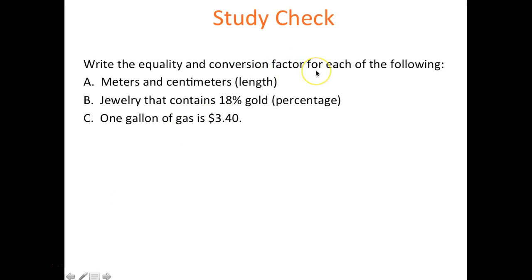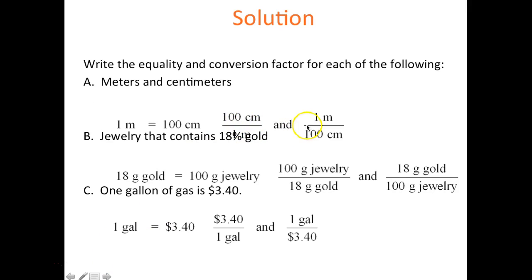Write equalities and conversion factors for each of the following. Meters and centimeters: 100 cm per meter, so 1/100 and 100/1. Jewelry that contains 18% gold: 18 g gold per 100 g jewelry, and 100 g jewelry over 18 g gold. One gallon of gas costs $3.40: $3.40 over one gallon, and one gallon over $3.40.